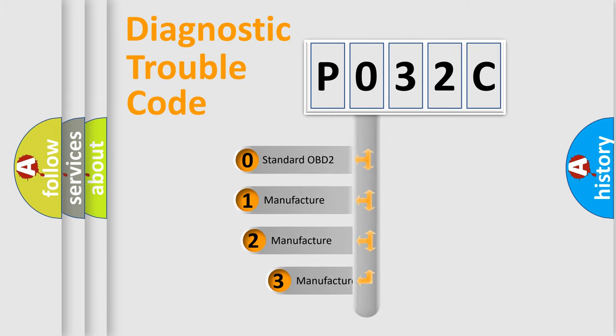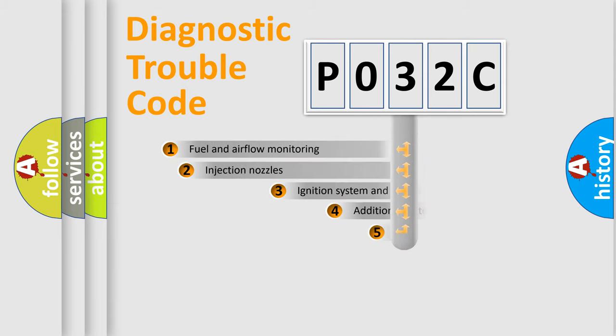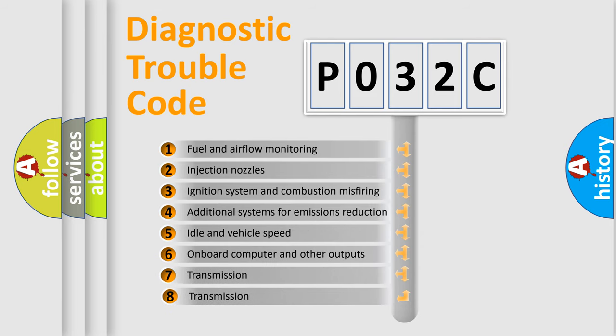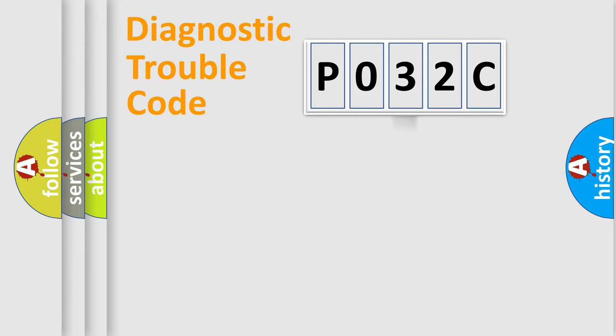If the second character is expressed as zero, it is a standardized error. In the case of numbers 1, 2, or 3, it is a more prestigious expression of the car-specific error. The third character specifies a subset of errors. The distribution shown is valid only for the standardized DTC code.